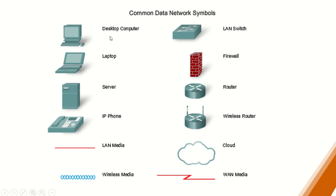Other symbols include the computer desktop, laptop, servers, and internet protocol phone. There is a symbol for LAN media — though in Packet Tracer it appears in black. There are also symbols for wireless connections, WAN, cloud, wireless router, firewall, and LAN switches.